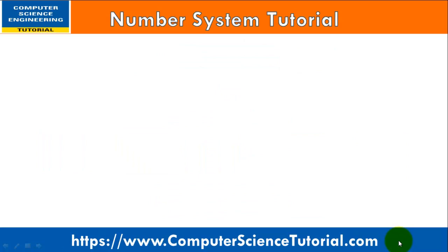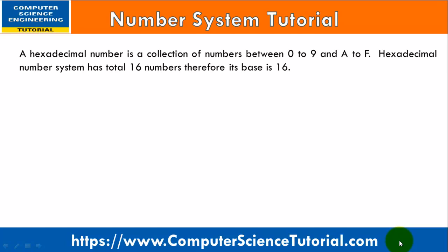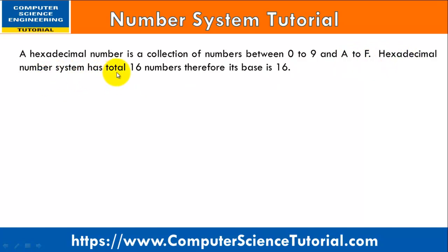Before starting the conversion process, we must know what a hexadecimal number is. A hexadecimal number is a collection of numbers between 0 to 9 and alphabets A to F. Any hexadecimal number has digits from 0 to 9 and alphabets A, B, C, D, E, F. Hexadecimal has a total of 16 symbols — 10 digits and 6 alphabets — therefore its base is called 16.